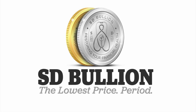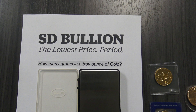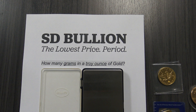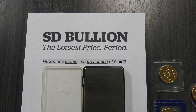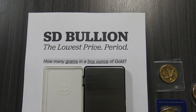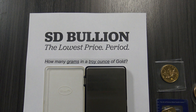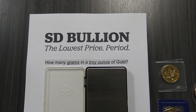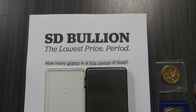This is SD Bullion with a Public Service Announcement. How many grams in an ounce of gold? First and foremost, the world most often measures gold bullion using either troy ounces or grams. One troy ounce has precisely 31.1034768 grams of gold.